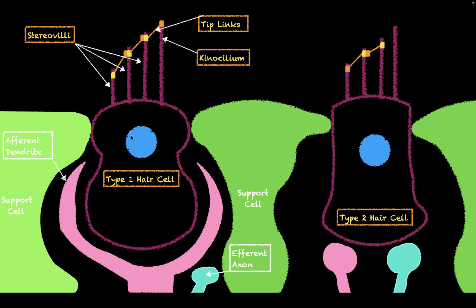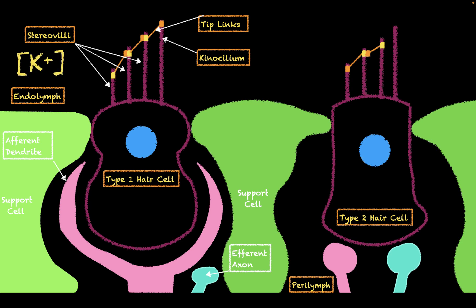These hair cells and support cells form tight junctions, which basically creates two fluid compartments. The first is going to be the endolymph, and the second is going to be the perilymph. The endolymph is high in potassium concentration and the perilymph is low. This means there is a strong electrochemical gradient that drives potassium from the endolymph into the perilymph, which is incredibly important for the sensation mechanisms.